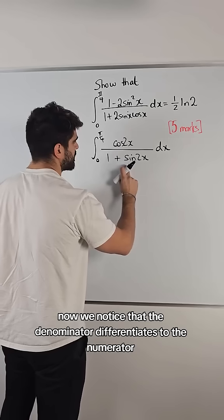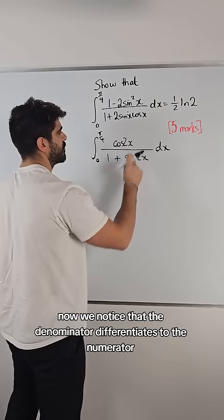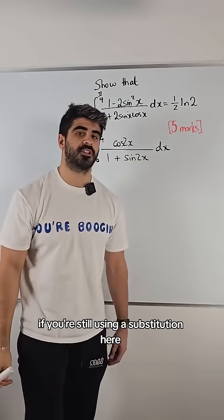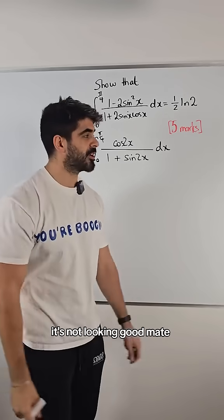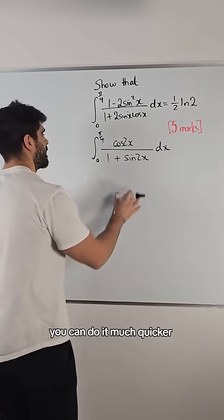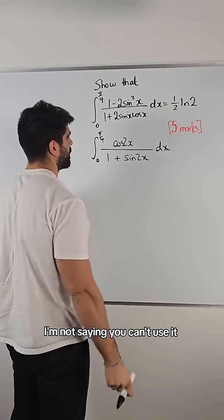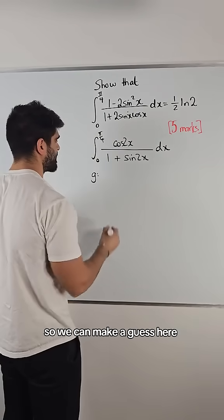Now, we notice that the denominator differentiates to the numerator. If you're still using a substitution here, it's not looking good, mate. You can do it much quicker. I'm not saying you can't use it, but it's just quicker not to use it. So, we can make a guess here.